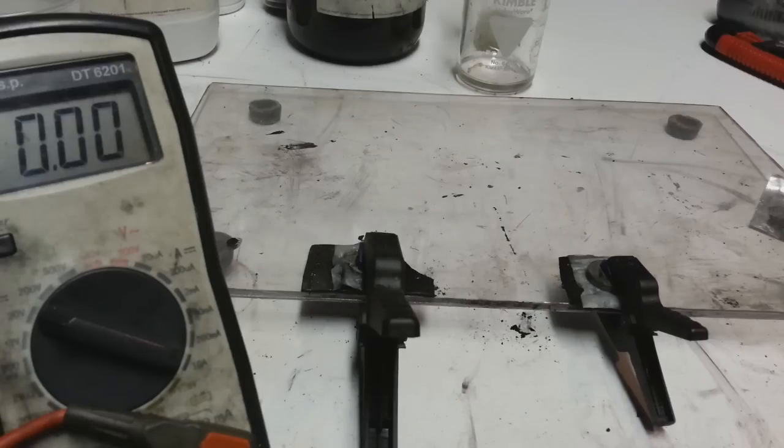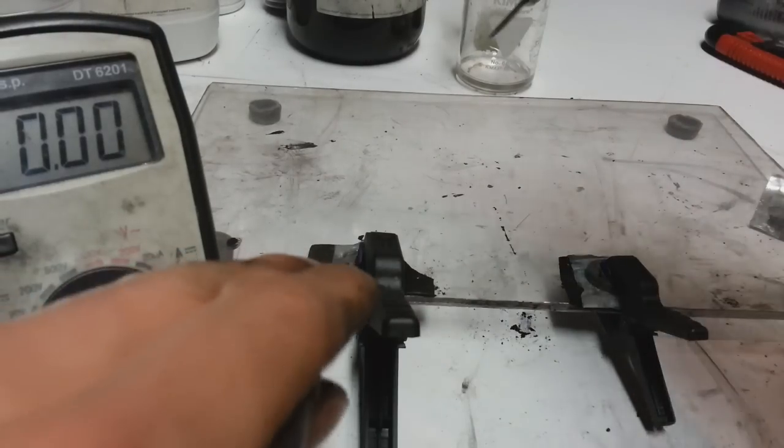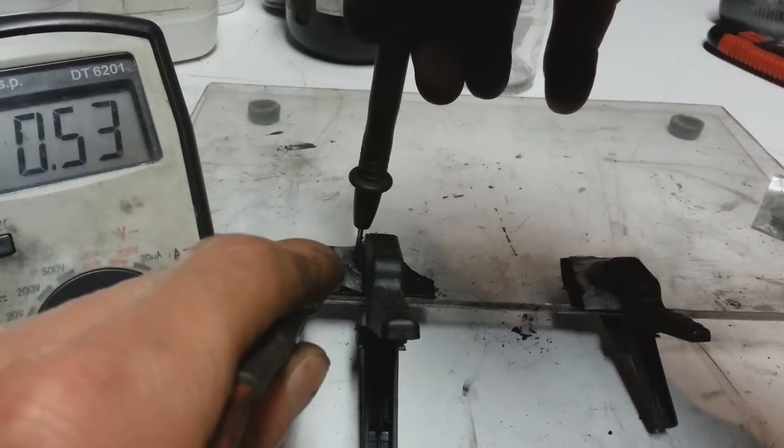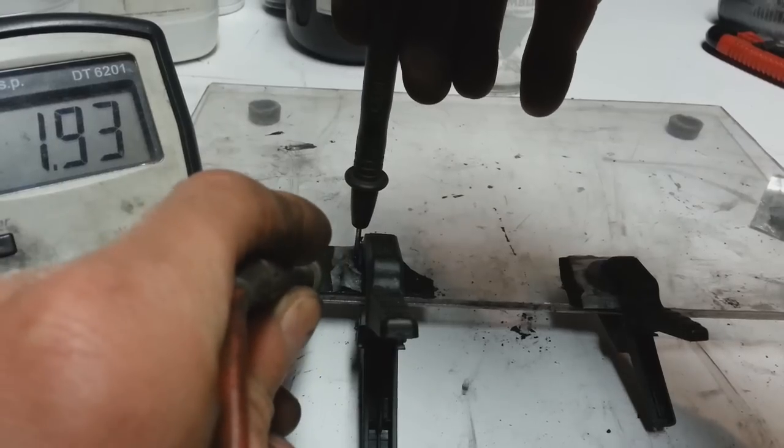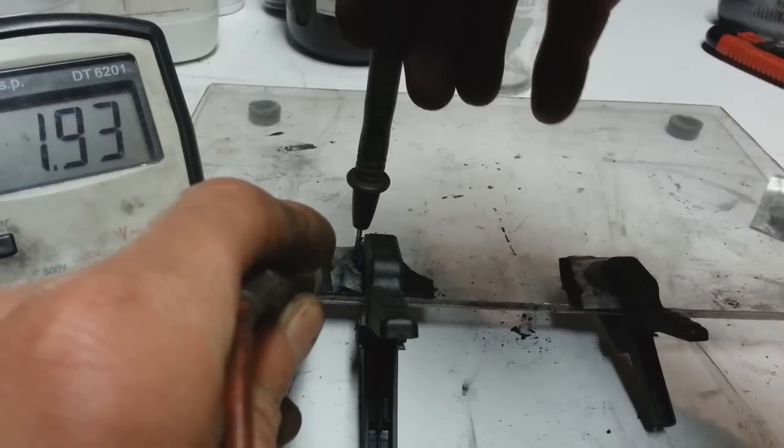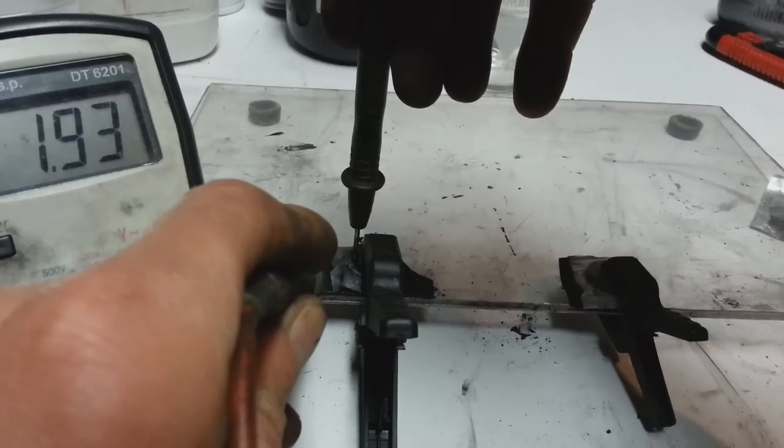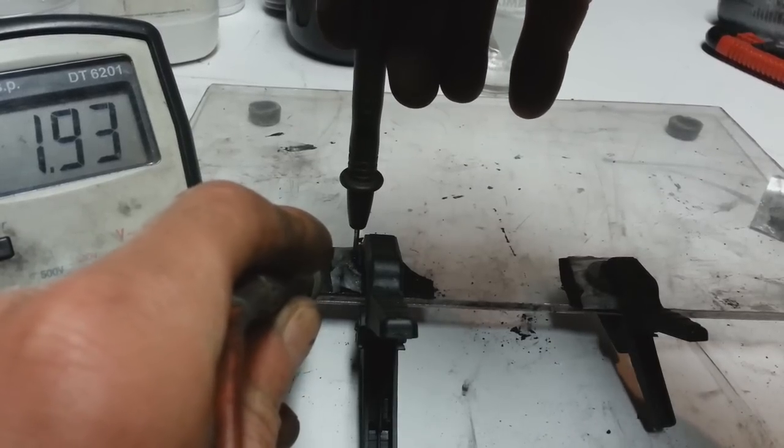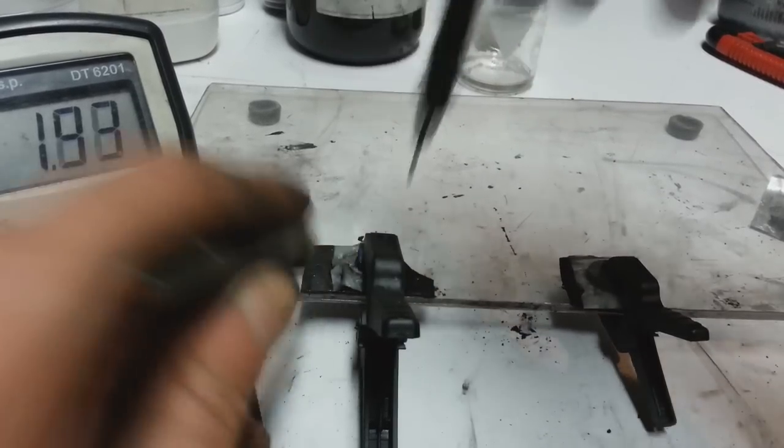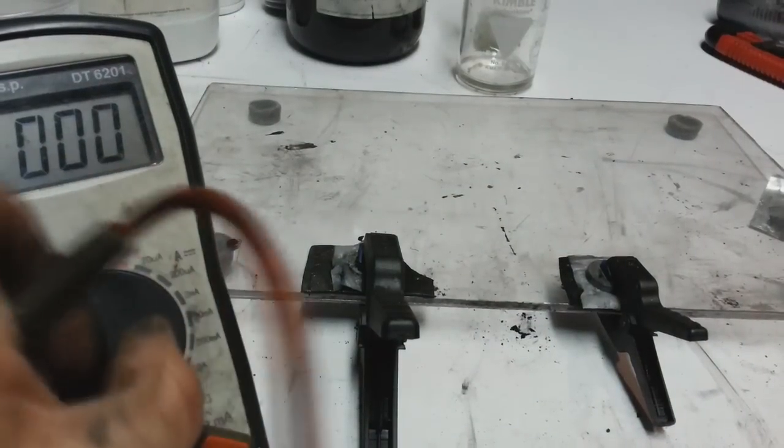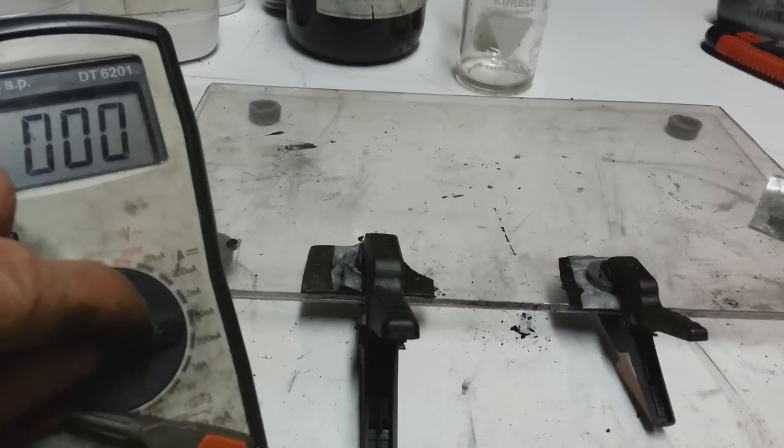First things first, I will show you the voltage of this test battery. The voltage right now of this magnesium battery is 1.93 volts. And now I will measure the current.